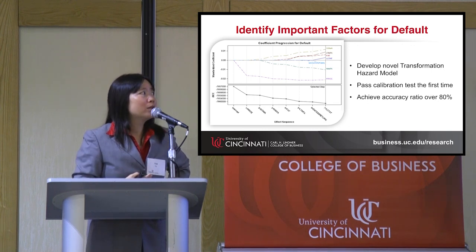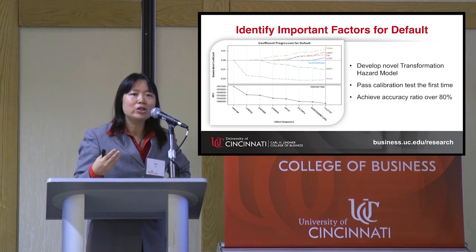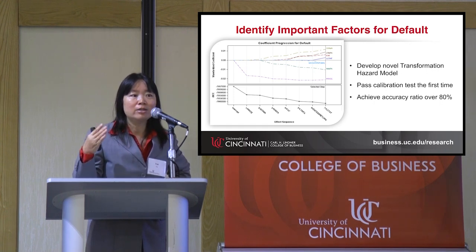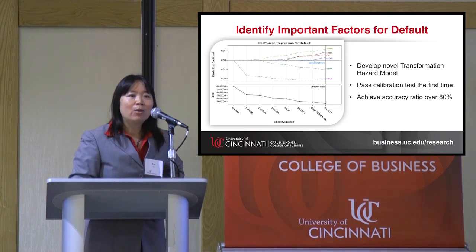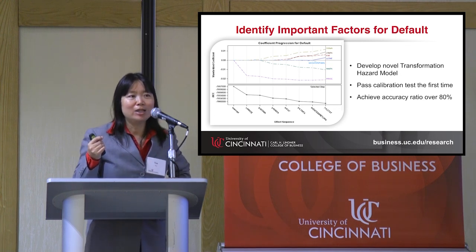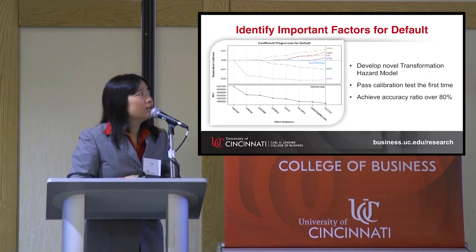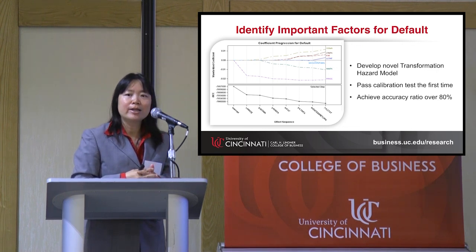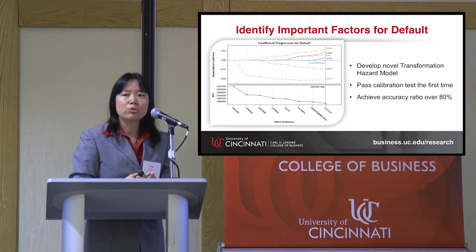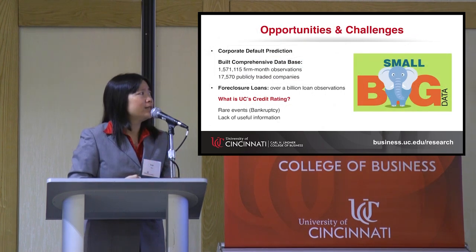In a separate work, my collaborators and I developed a novel class of transformation discrete hazard models. In this work, we not only focus on rankings and ratings like credit scores — we actually estimate the actual probability of default, which is essential when banks need to calculate their cash reserves using numbers rather than just rankings. We're happy to report this work passes the calibration test for the first time and can achieve an accuracy ratio over 80%.